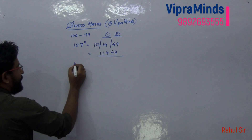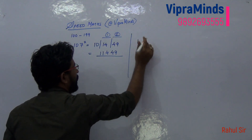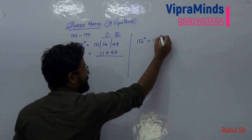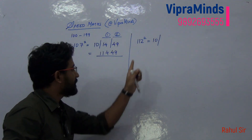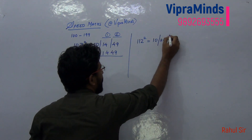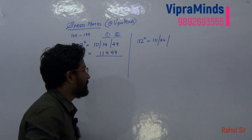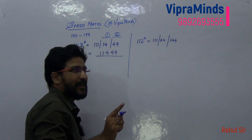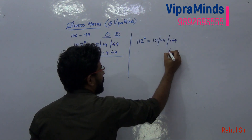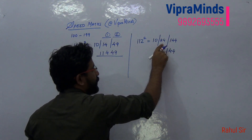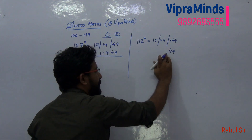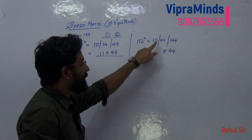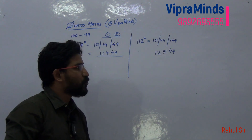Now we'll see the next example: 112 squared. Again we'll make three blocks. In the first block write 10. In the next block take double of the last two digits — 12 doubled is 24. In the last block take the square of 12, which is 144. The last block should have at most two digits, so we write 44 and carry forward 1, making the middle block 25. We write 5 in the middle block and carry forward 2, so 10 plus 2 is 12. Your answer will be 12544.